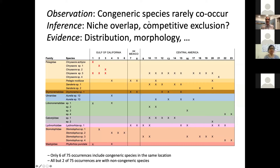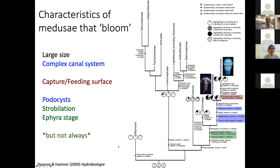This also has applied importance. Mapping morphological characters onto a phylogeny, we find that jellyfishes predominantly involved in blooms — which can interfere with fisheries — tend to share particular characteristics: they are very large, have complex canal systems and well-developed feeding surfaces, have life history stages resistant to extreme conditions, and have strobilation, producing small ephyrae rather than metamorphosing a polyp into a complete jellyfish. These are traits that may underlie phenomena that can affect the livelihoods of people in coastal systems.